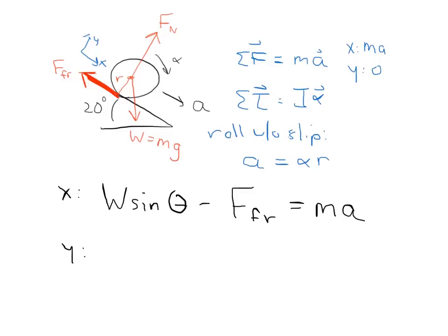In the y direction, we have the normal force pointing up minus the weight times cosine zero because that's the component in the y direction. And that's going to be equal to zero. There's no acceleration in the y direction.